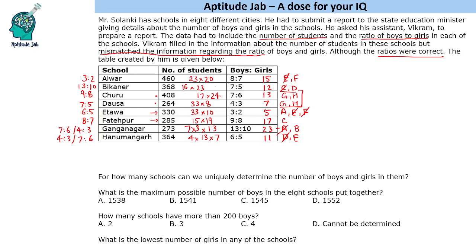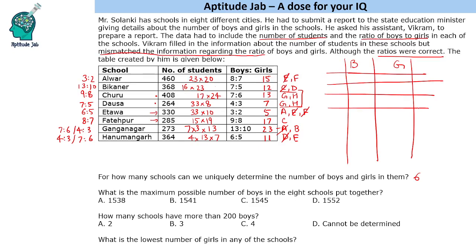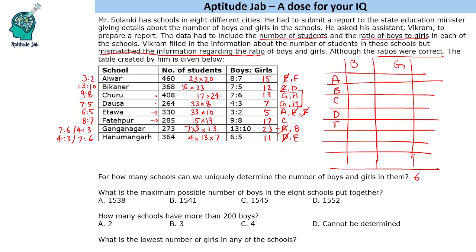We need to answer the questions based on the ratios we have determined. For six schools we can determine the numbers; for G and H we cannot. The first question: for how many schools can we uniquely determine the number of boys and girls? The answer is 6. Now let us find the boys and girls counts. For school A with 5 parts, 1 part is 92. So boys = 92 into 3 = 276, and girls = 92 into 2 = 184. For B with 23 parts, 1 part is 16. So boys = 16 into 10 = 160, and girls = 208.